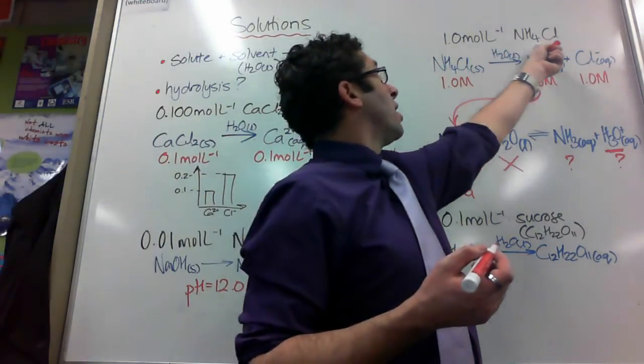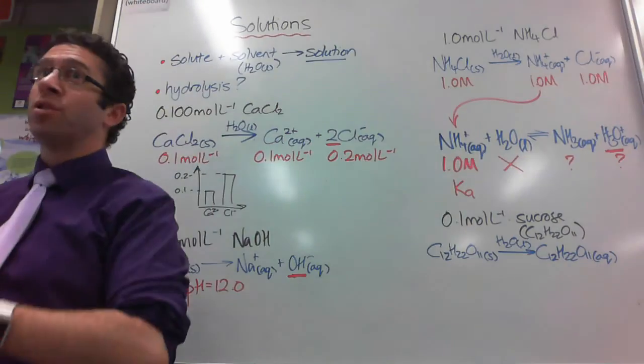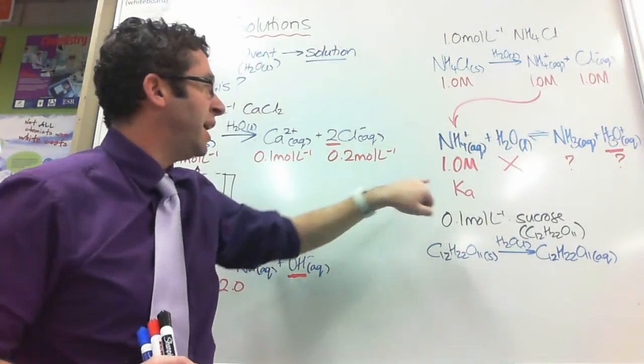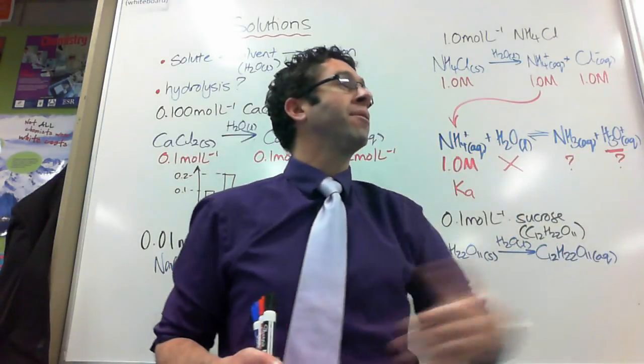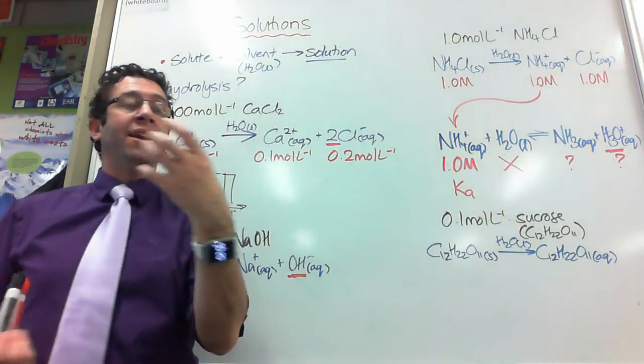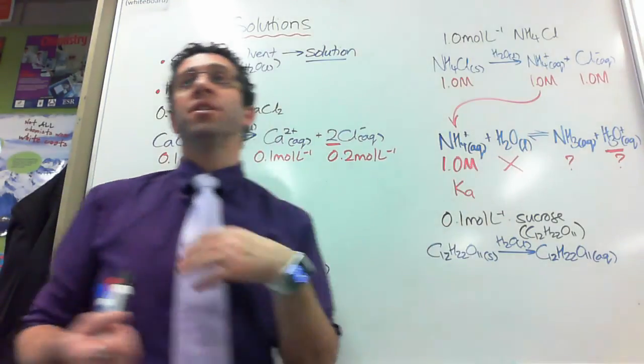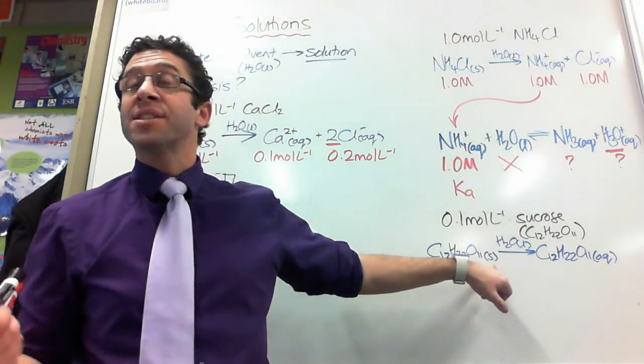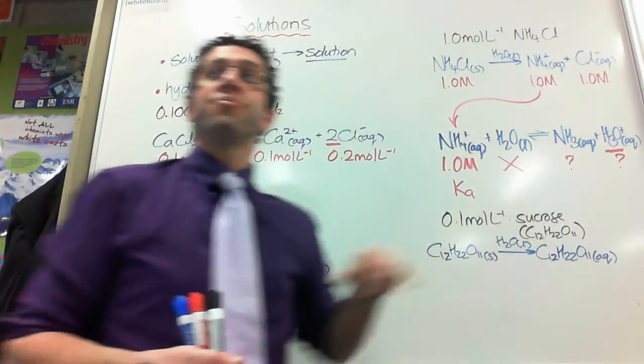If I've got a salt that contains the conjugate of a weak acid or a weak base, it doesn't just dissolve, it hydrolyzes as well and I'm going to need a thing called Ka to work out what concentration these things are in and ultimately probably the pH. If I've got something that is a molecular solid or a molecular gas that does not react with water, like sucrose, like ethanol, like methanol, then all I'm doing is going from the solid or gas if it was something like O2 to the aqueous and that's all.